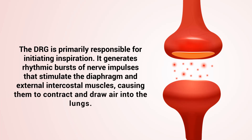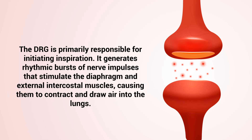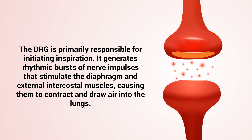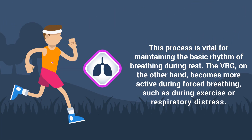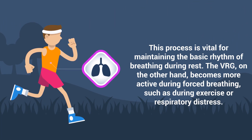The DRG is primarily responsible for initiating inspiration. It generates rhythmic bursts of nerve impulses that stimulate the diaphragm and external intercostal muscles, causing them to contract and draw air into the lungs. This process is vital for maintaining the basic rhythm of breathing during rest.